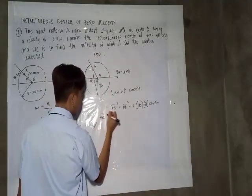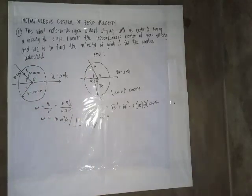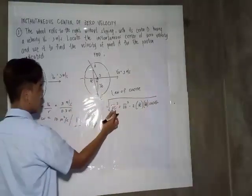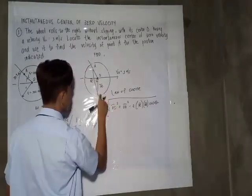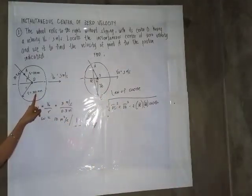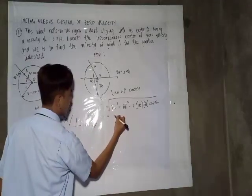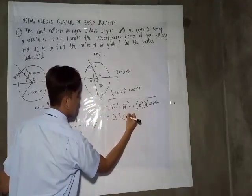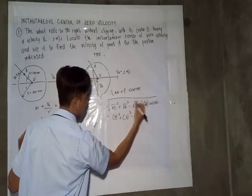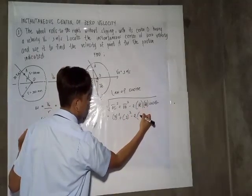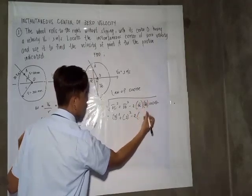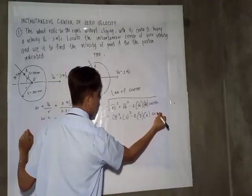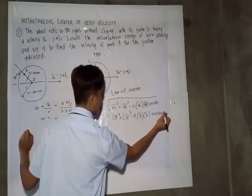So square root of this. So substituting the given data, we have the OC or 300 millimeters converted to meters, we have 0.3 squared plus here 200 millimeter equals 0.2 squared minus 2 multiplied by OC, we have 0.3 multiplied by 0.2 cosine 120 degrees squared.